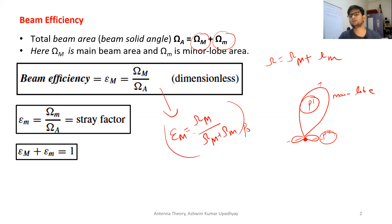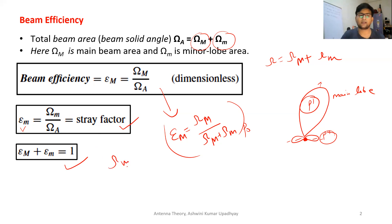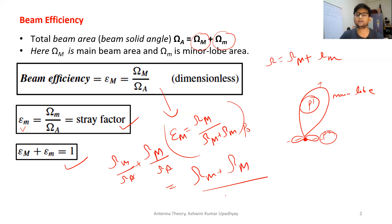Related to this is a term called stray factor, in which the numerator is the beam area in the minor lobe. So E_m = Ω_m / Ω_A, which is called stray factor. If you add these two terms you will get one, because Ω_m / Ω_A + Ω_M / Ω_A = (Ω_m + Ω_M) / Ω_A, and Ω_A is Ω_M + Ω_m. So it will become one.